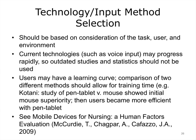Input method selection should be based on consideration of the task, user, and environment, keeping in mind that current technologies can progress rapidly so that outdated studies and statistics should not be used. Users may have a learning curve which can affect initial comparisons of two different methods, so allowance should be made for training time. In some cases, one method appeared faster initially, but with training or experience, the situation was reversed. Speed and accuracy of voice recognition increases with use of the software, so initial measurements can be misleading.